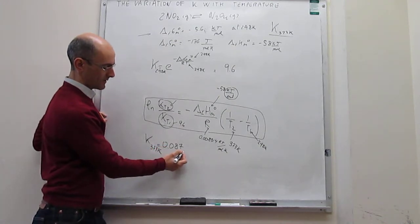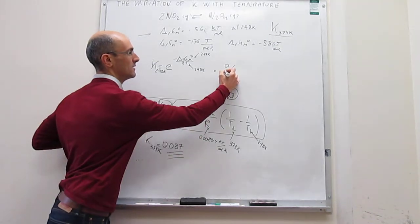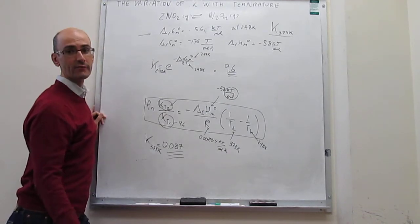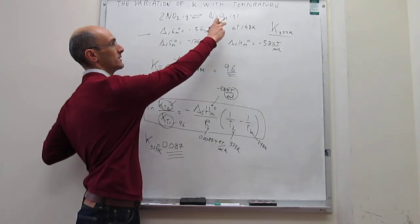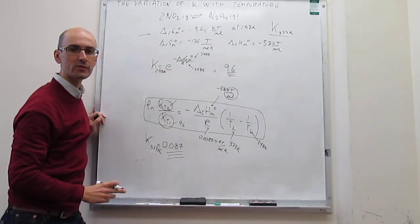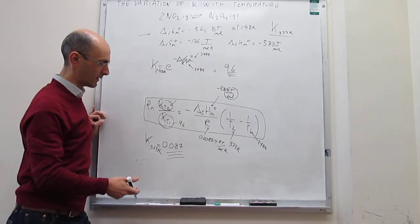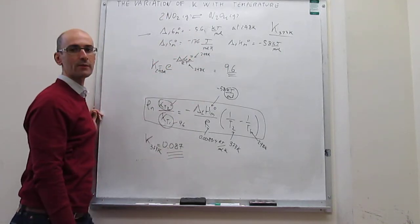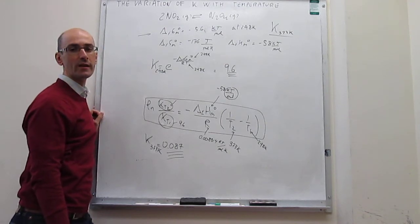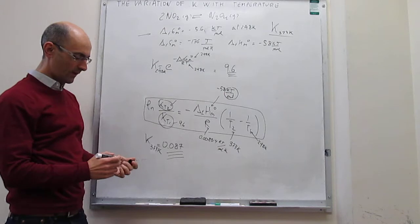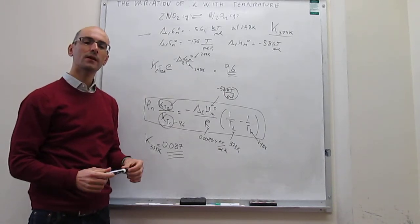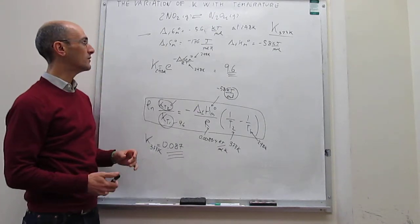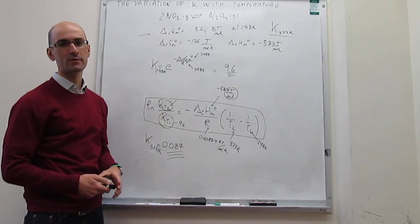This is very interesting because there is a dramatic change in the equilibrium constant when you increase the temperature. At 298 K the equilibrium is displaced towards products, so the products dominate the reaction mixture. But if you increase the temperature to 373 K, the opposite happens — the equilibrium is displaced towards reagents, and the reagents dominate. In this video we have seen how to compute how the equilibrium constant changes with temperature using the variation of the molar Gibbs energy with temperature. Thank you.